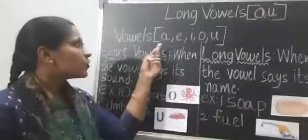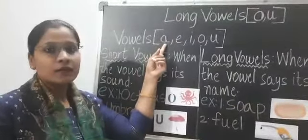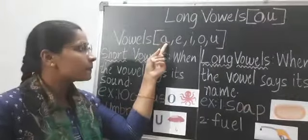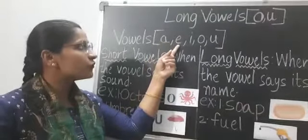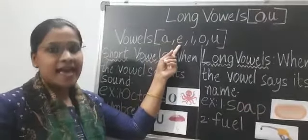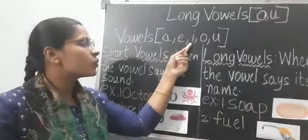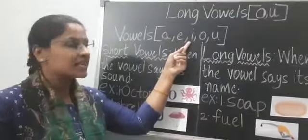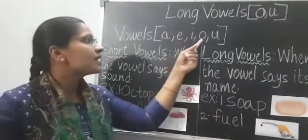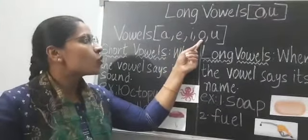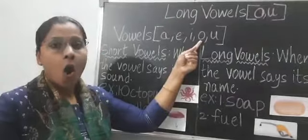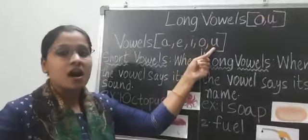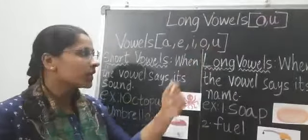What is the sound of A, children, in phonics? The sound of E is A. The sound of I is E. The sound of O is O. The sound of U is A. Okay?